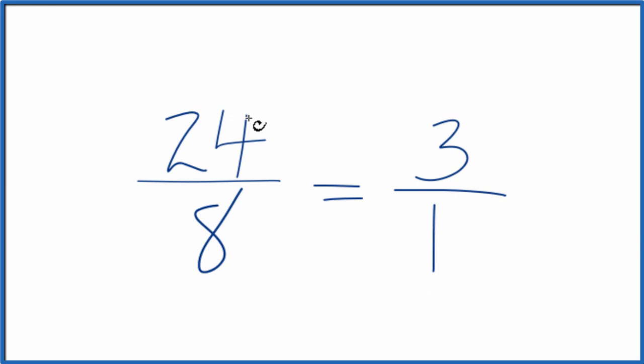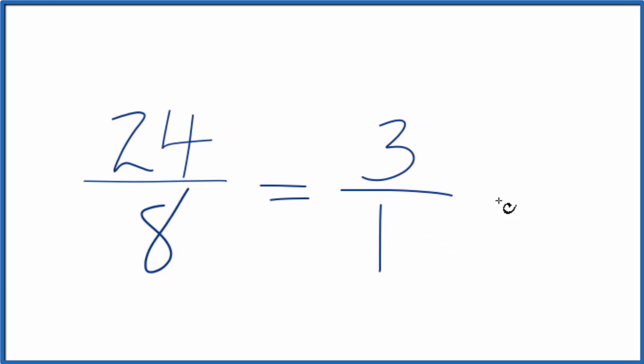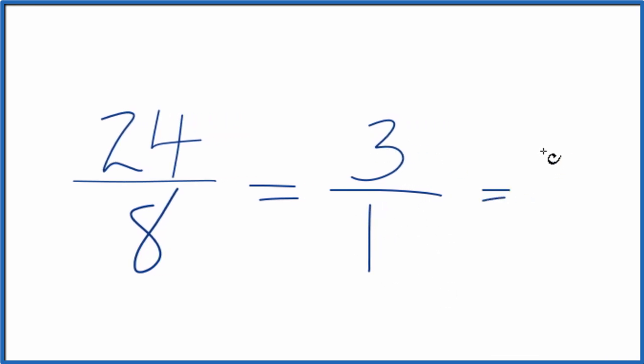So the fraction 24 eighths equals 3 over 1. Since 3 over 1, we're just dividing by 1, we could just write this as 3 divided by 1 is just 3, so we could write the whole number.